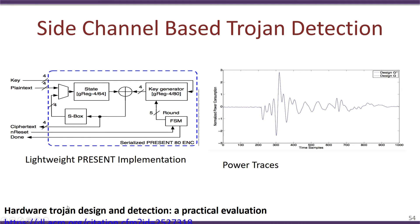Let us look at an example. You can refer to this paper available online for more details about this technique. The test circuit is a particular implementation of a cryptographic cipher known as PRESENT. This hardware design takes as input the secret key and the plaintext, and provides an output of the ciphertext along with a signal indicating completion. To collect the power profile, the fabricated IC is powered on and various inputs are given. The inputs of plaintext and key get encrypted to provide the corresponding ciphertext. Side by side, the power consumed by the chip is monitored on a powerful oscilloscope. The power traces are collected for a specific input, with the x-axis showing time samples and the y-axis showing normalized power consumption.